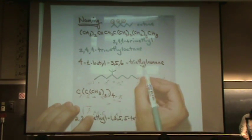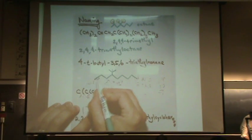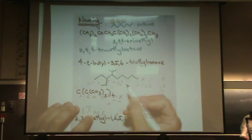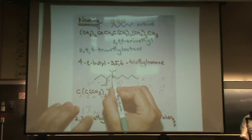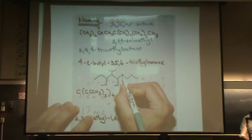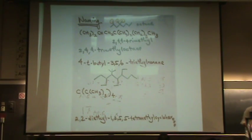And then at three, five, and six are three ethyls. So there's an ethyl at three, five, and six. And that's the structure. So it's actually a little easier if you get used to it to go from the name backwards.